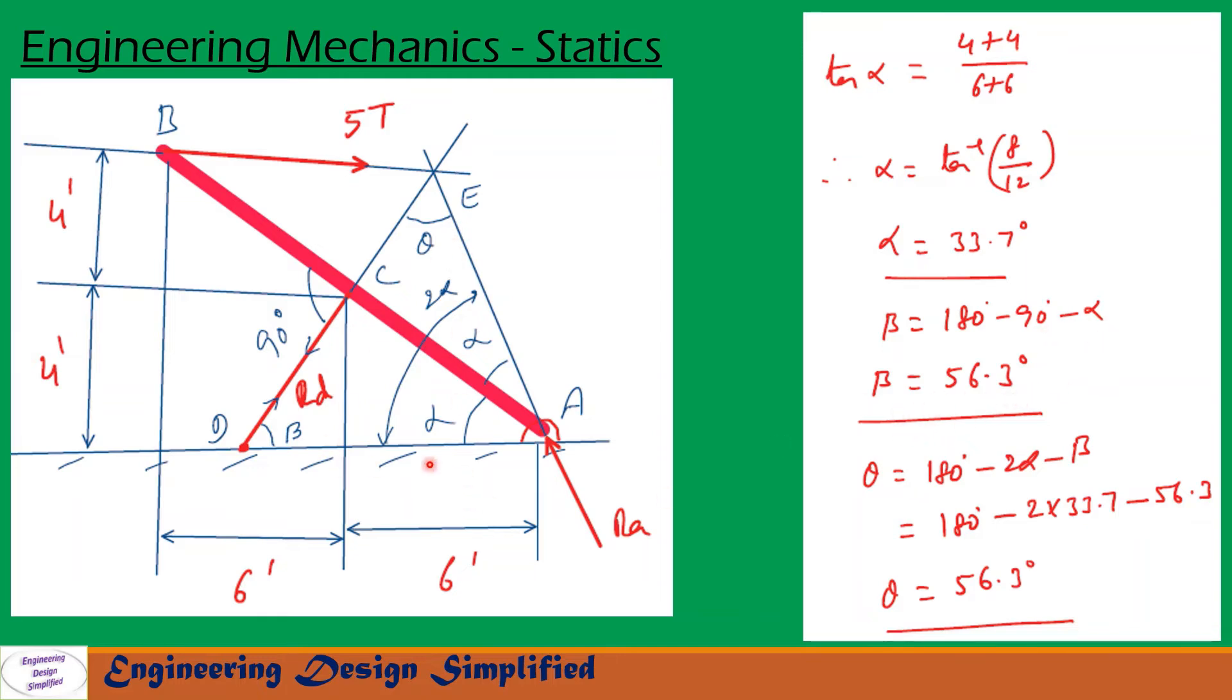Now, let us see this triangle here, A, D, E. In this triangle, we know that alpha plus alpha, that is 2 alpha, this angle and this angle beta. Now let us find theta. Theta can be written as theta equal to 180 minus 2 alpha minus beta. From this theta is calculated as 56.3 degrees.